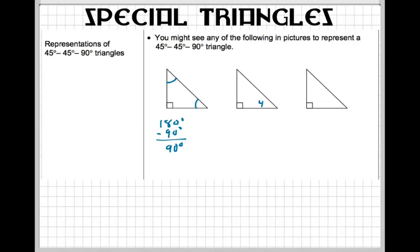Another way might be where you just have 45 degrees right here and then 90 degrees right there. If you know that this is 45 degrees and this is 90 degrees, then this last angle has to also be 45 degrees. So that's another way you can see a 45-45-90.